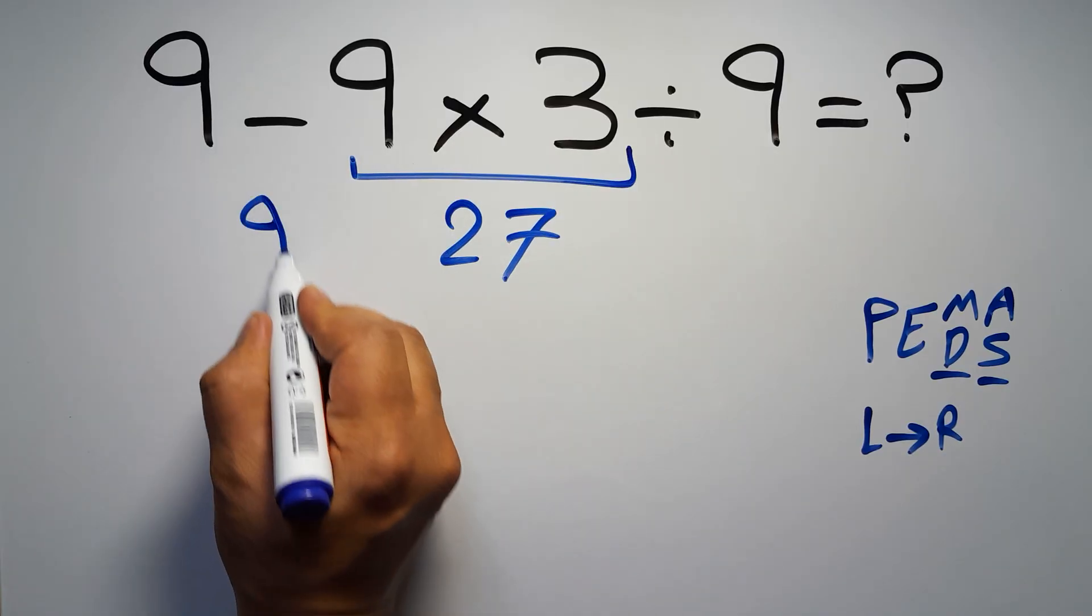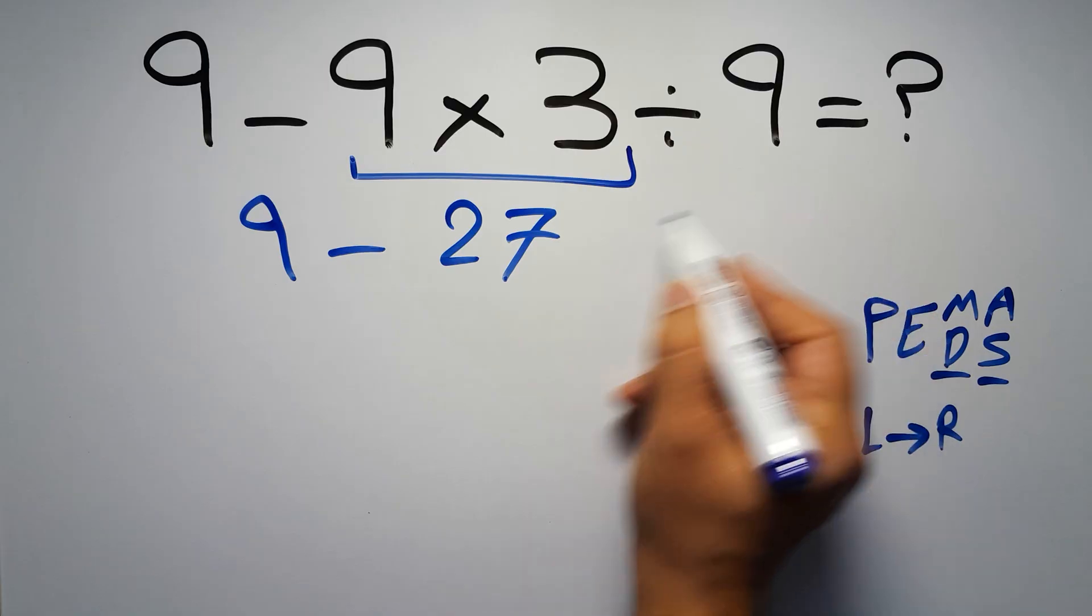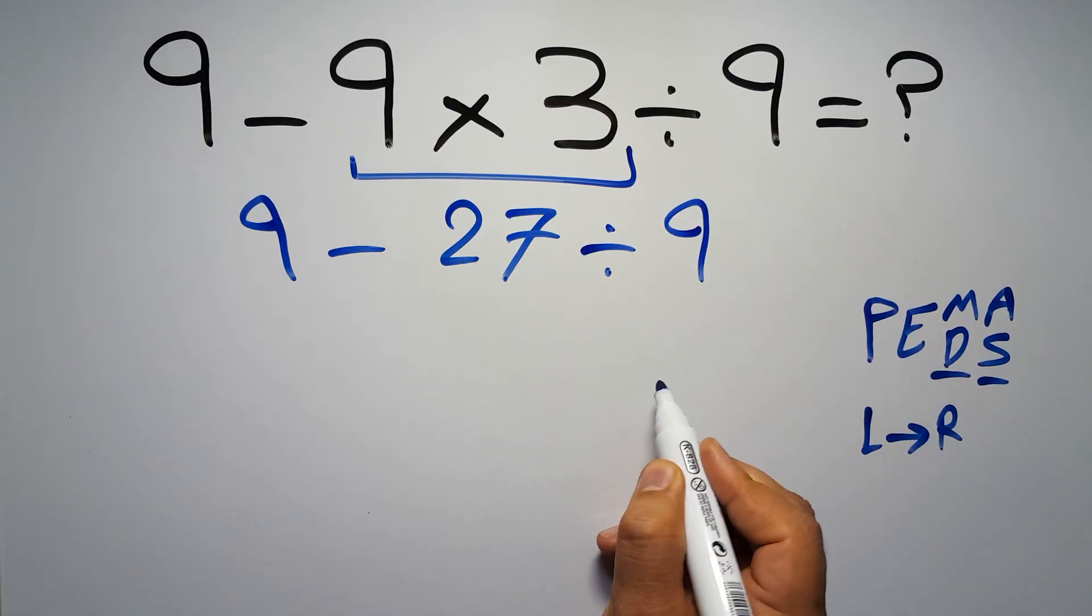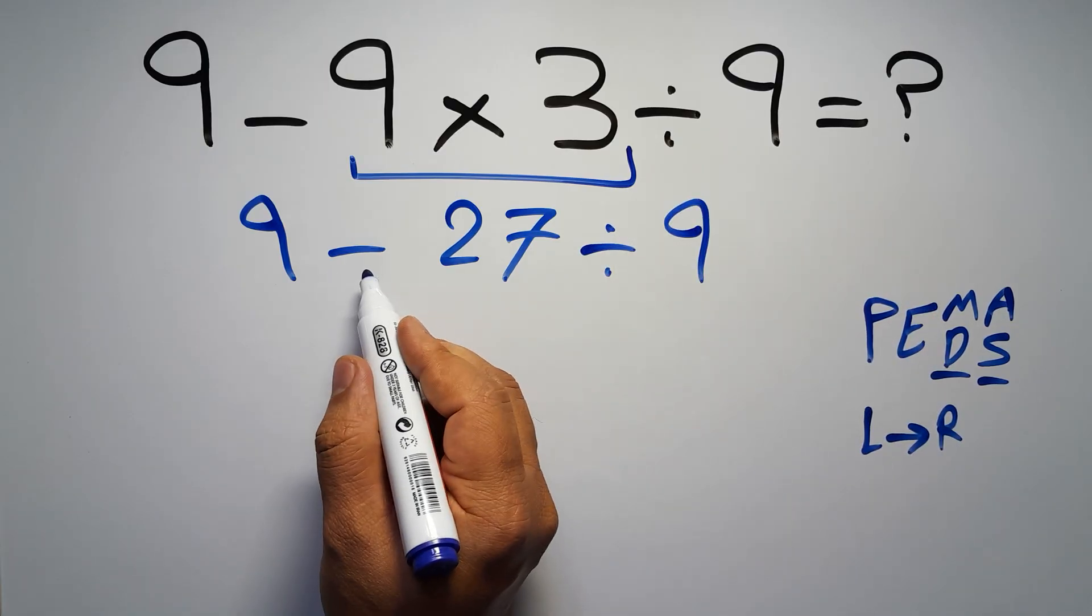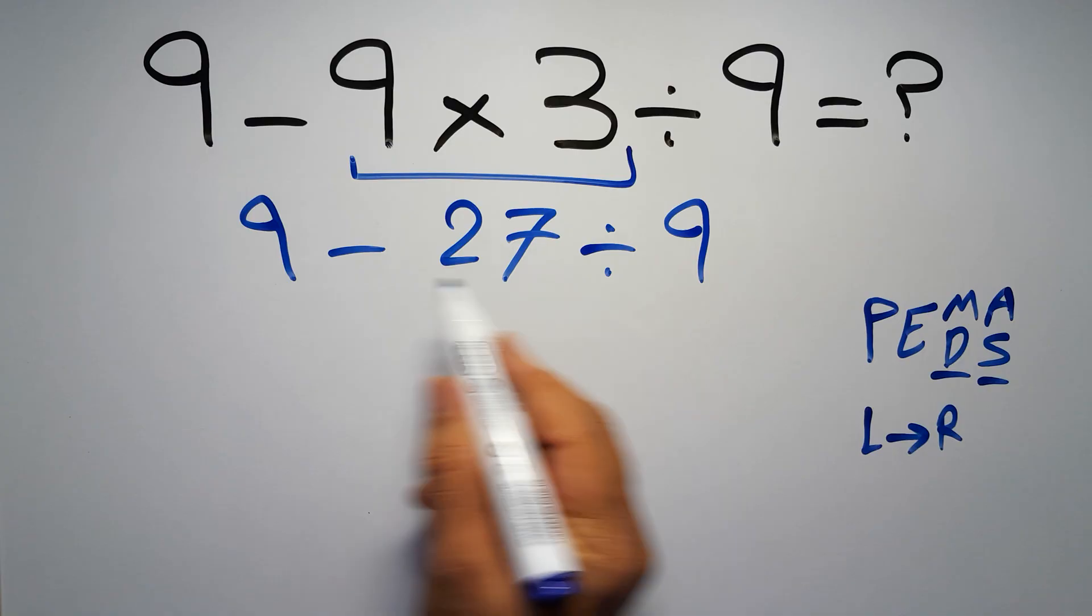So 9 minus 27 then divided by 9. Now we have one subtraction and one division.